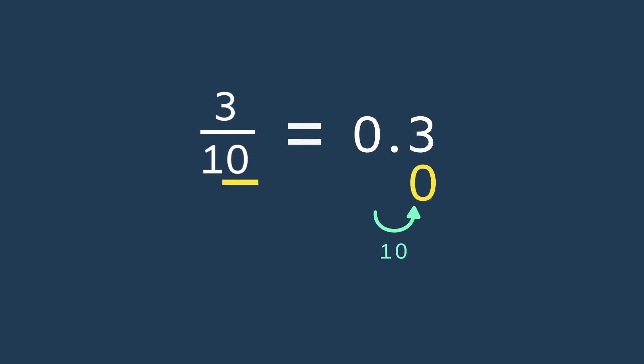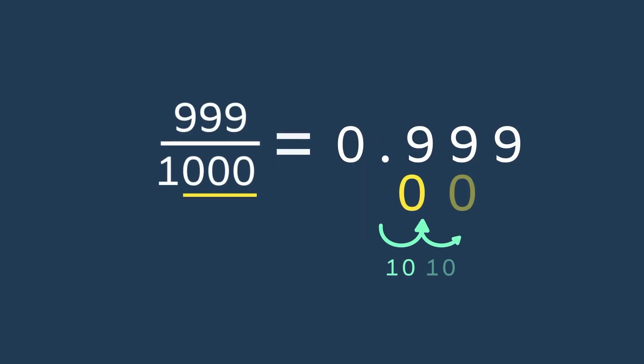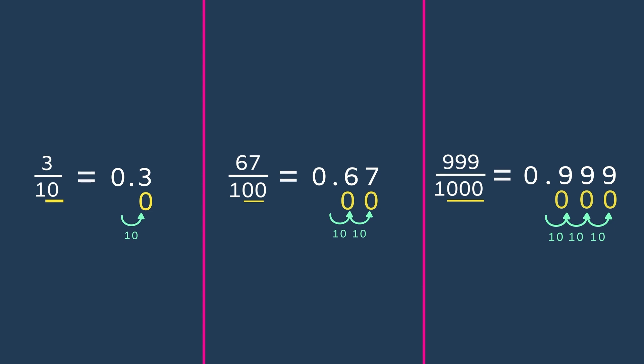A cool trick to remember is that the amount of zeros in your base 10 number will tell you how many digits should follow the decimal point. Every time the base 10 increases from 10 to 100 to a thousand, it shifts one spot to the right.